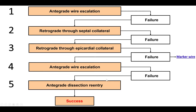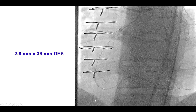This is an overview of the steps we took: antegrade wire escalation didn't work; retrograde through septals; retrograde through epicardial collaterals; then antegrade wire escalation again; and finally, dissection re-entry using the Stingray system to successfully cross into the right posterolateral branch.